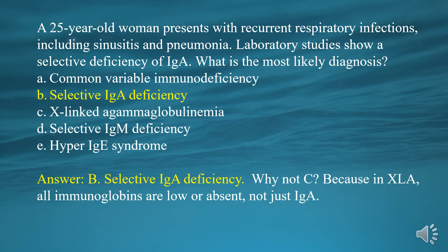Why not B? Because in XLA, all immunoglobulins are low or absent, not just IgA.